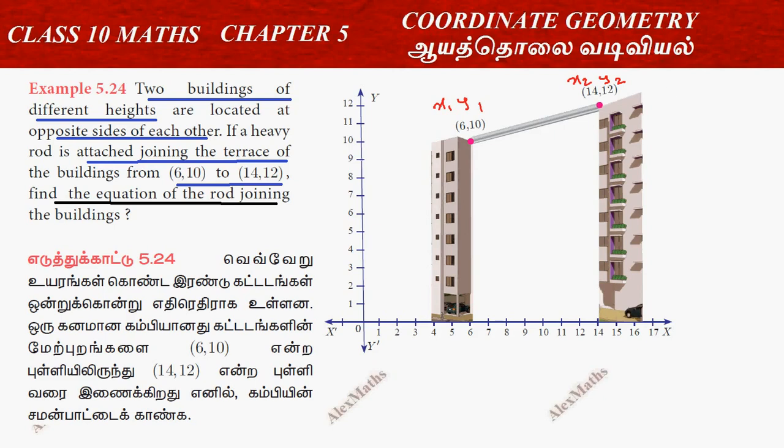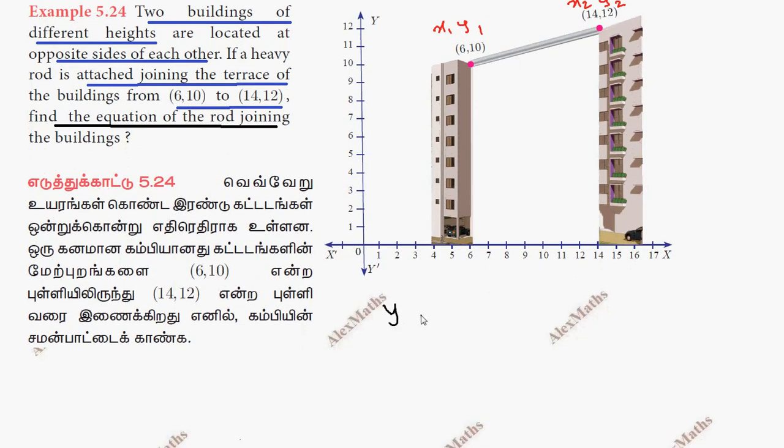Two point formula is y minus y1 by y2 minus y1 equal to x minus x1 by x2 minus x1.